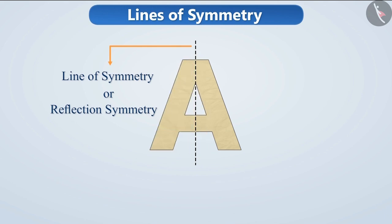By looking at the example of A, we can say that it is a figure with just one line of symmetry. But there are some figures in which more than one line of symmetry are present.